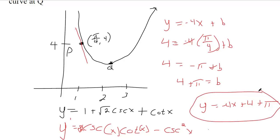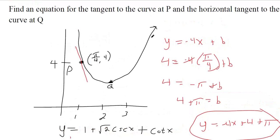That was our b value. The textbook might convert that to a decimal, but you could leave it. That's the first part — the tangent to the curve at P.